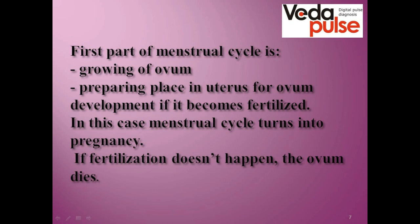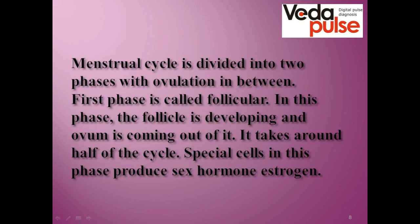Between phases there is a very important process called ovulation. The first phase is follicular — it is when the follicle from which the ovum is produced forms. This takes up to half of the cycle. The main hormone here is follicle-stimulating hormone, which produces the estrogen background.